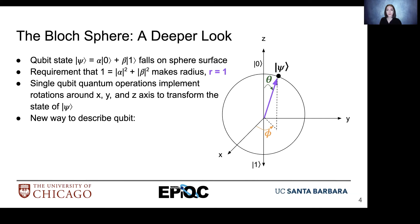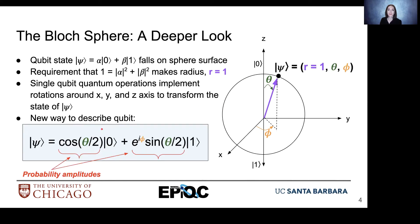We have a new way to describe the qubit in terms of our angles theta and phi. Here we have our probability amplitudes represented by cosine(θ/2) and e^(iφ)·sine(θ/2), and then we have our phase aspect, which is introduced by this e^(iφ) factor outside of our ket1.